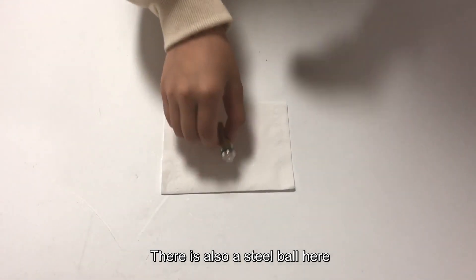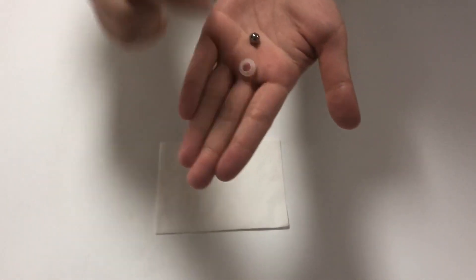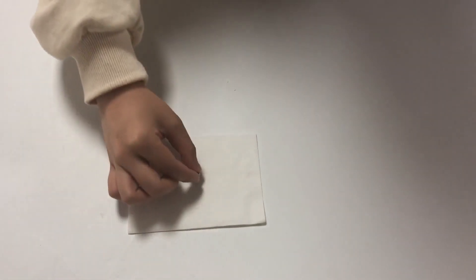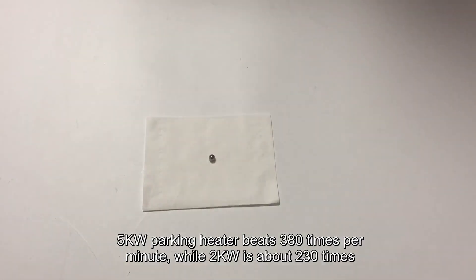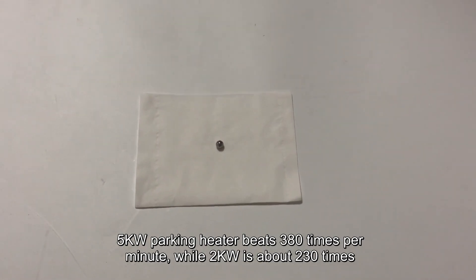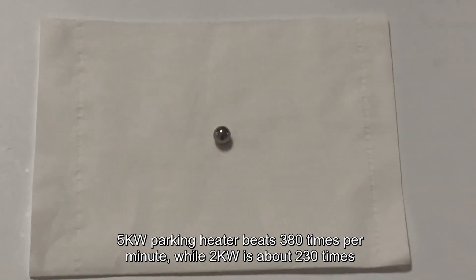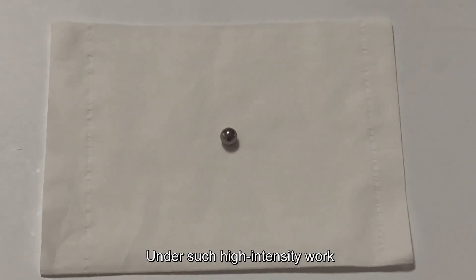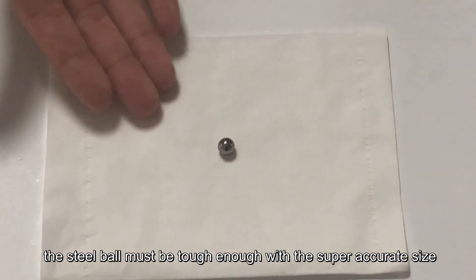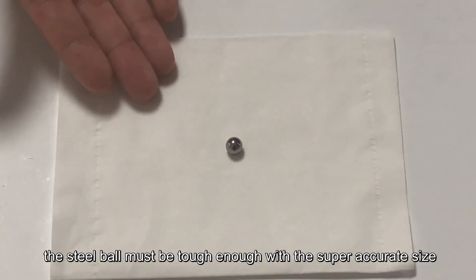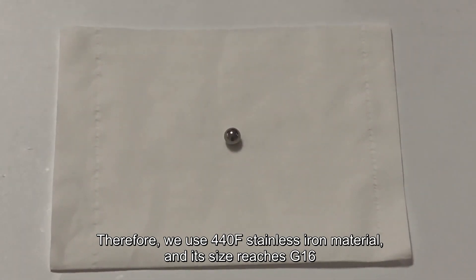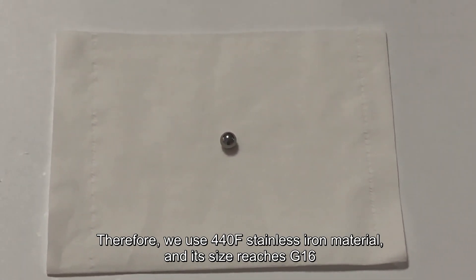There is also a steel ball here. It acts as a check valve. 5kW parking heater beats 380 times per minute, while 2kW is about 230 times. Under such high intensity work, the steel ball must be tough enough with a super accurate size. Therefore, we use 440F stainless iron material and its size reaches G16.